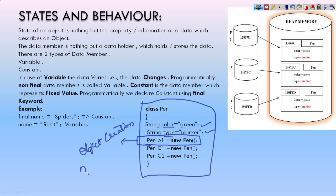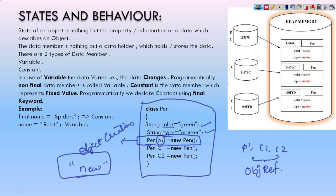Using the new keyword you can create an object. Here we have created three objects: p1, c1, and c2. These are called object references. When you create a p1 object — Pen p1 = new Pen — in your heap memory where objects are stored, it gives an object address and stores it with its properties and the class name. All three objects are stored with different object addresses.